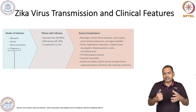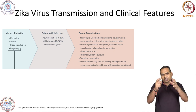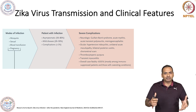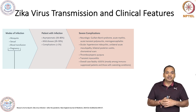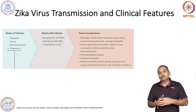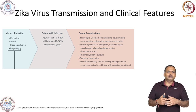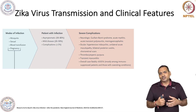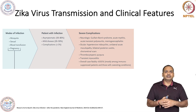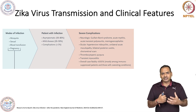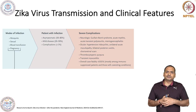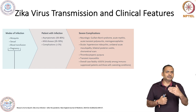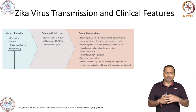Meningoencephalitis is another complication. The brain and spinal cord are covered by membranes we call meninges. There is inflammation of the brain meninges, which is why we call it meningoencephalitis. This virus also affects the eyes, with various ocular symptoms associated with the infection.